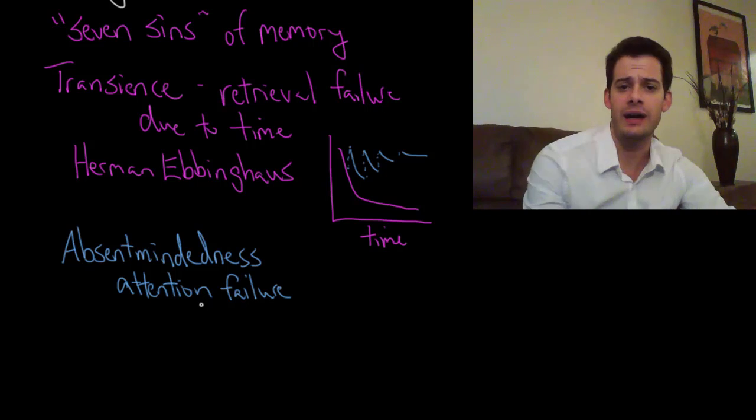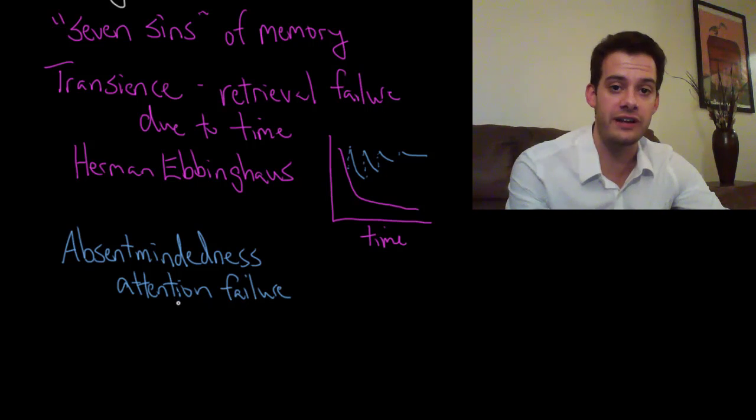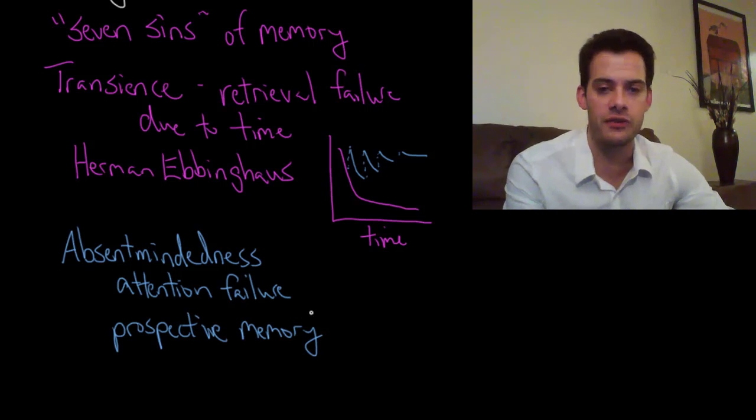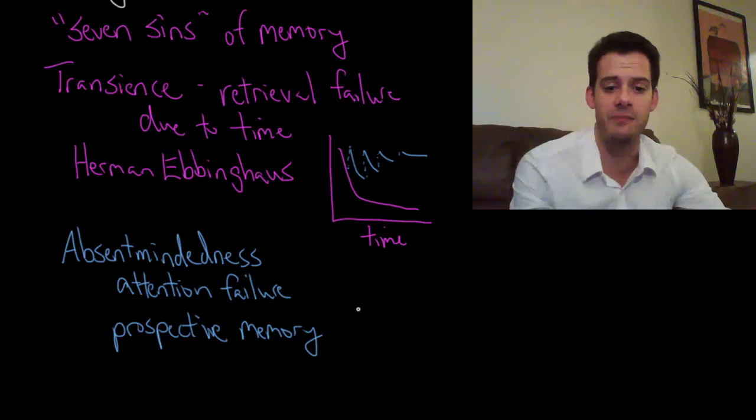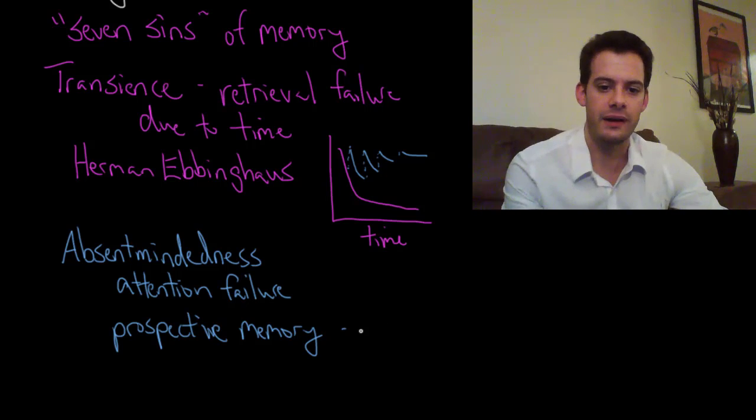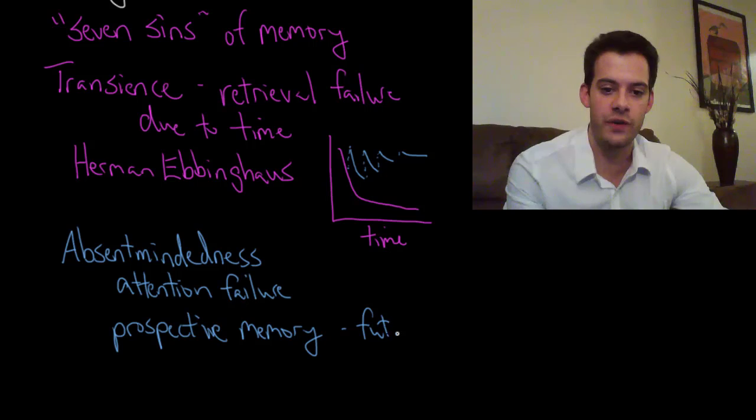Now this brings us to a strategy for reducing absent-mindedness. And this refers to something called prospective memory. And prospective refers to the future. So the idea of prospective memory is really memory for the future. It's kind of a weird idea, right? Remembering things that haven't happened yet. So this is your future memory.